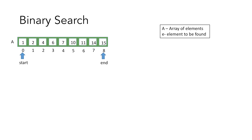Before moving forward with interpolation search, I would recommend you watch the tutorial on binary search, and I will do a quick recap in this video. In binary search, if we are given an array A and the element to be found is 4, by using the start and end variables which point to the start and end of the array, we calculate the middle index which is equal to start plus end divided by 2, and we check the value at the middle index.